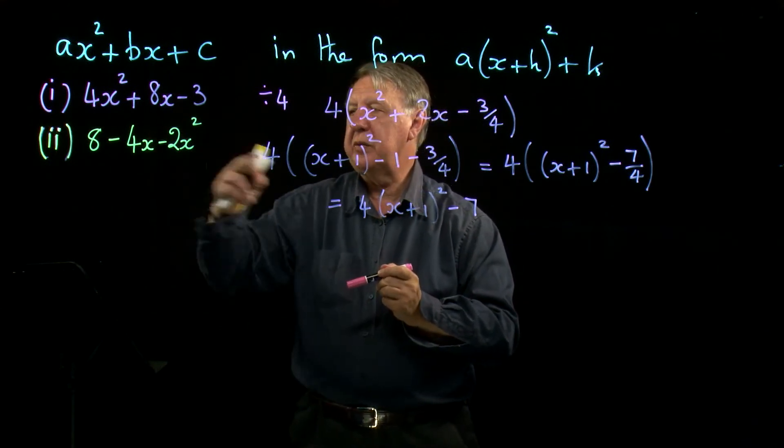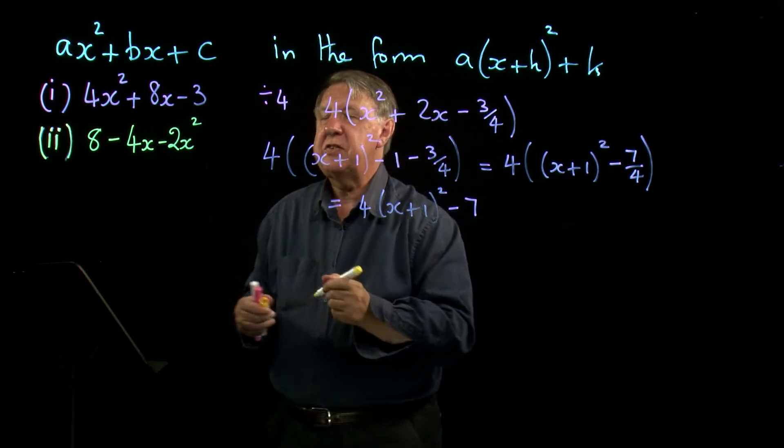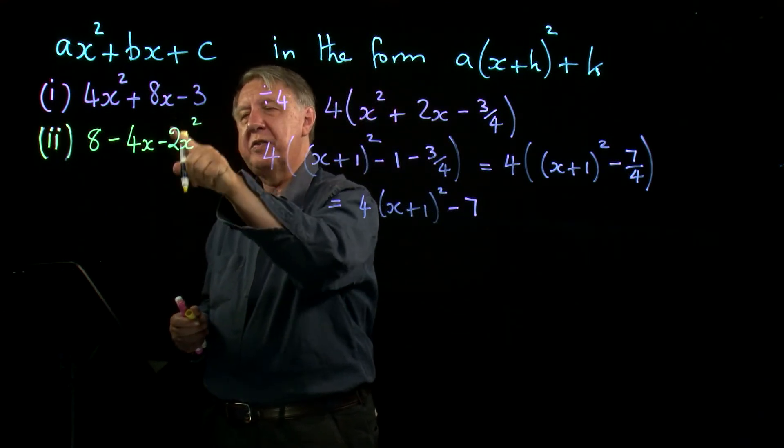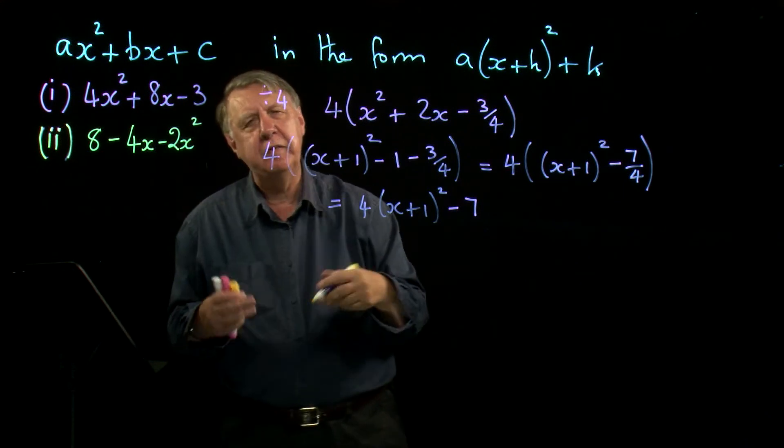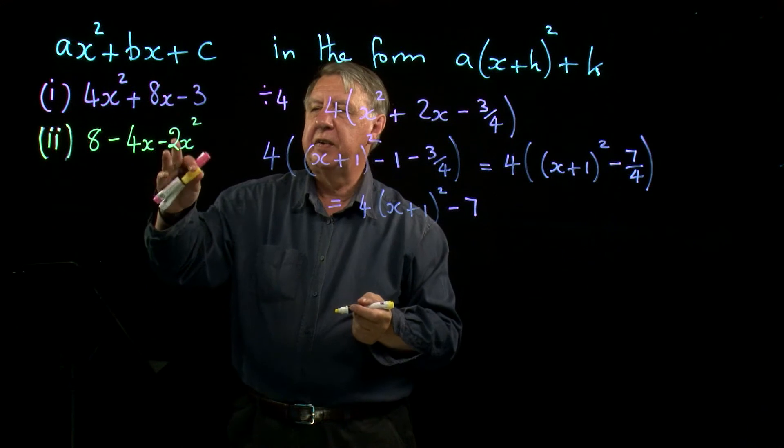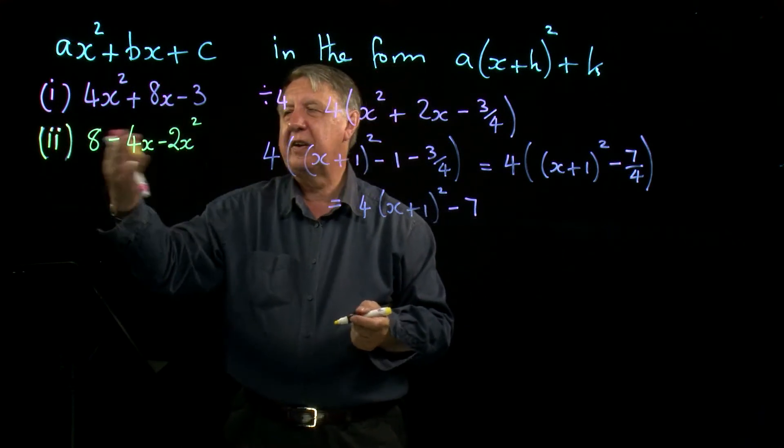Let's now look at the second one. Why is this one different? Well it isn't really, but it's the fact that it's written a different way round because the x squared term is negative. Very often you find that if the x squared term is negative, it is written at this end and not at the other end.